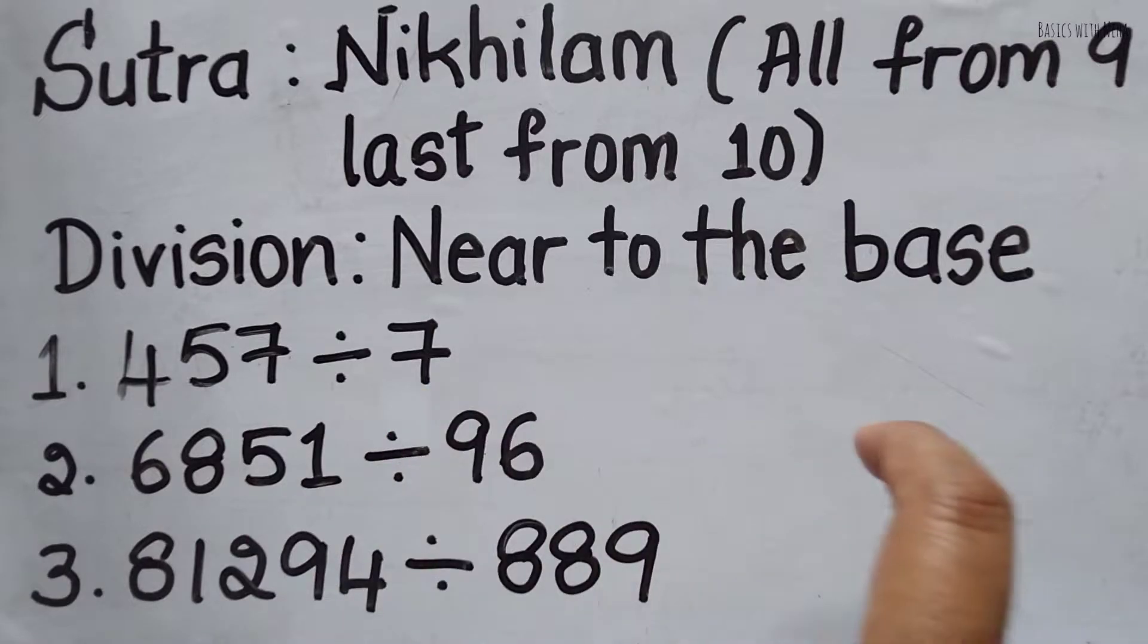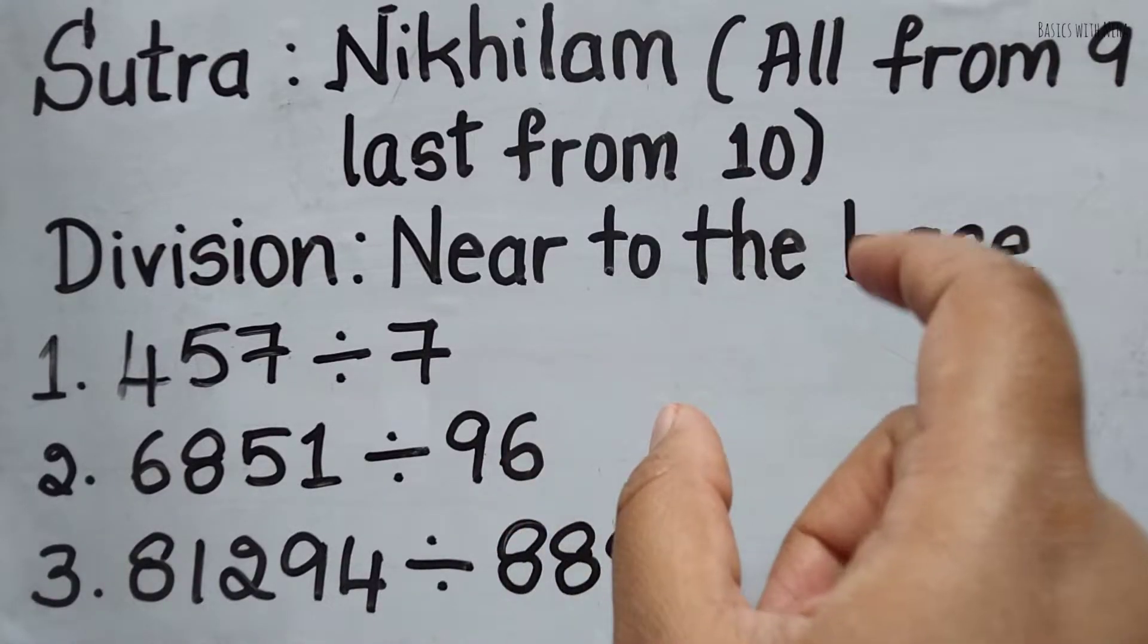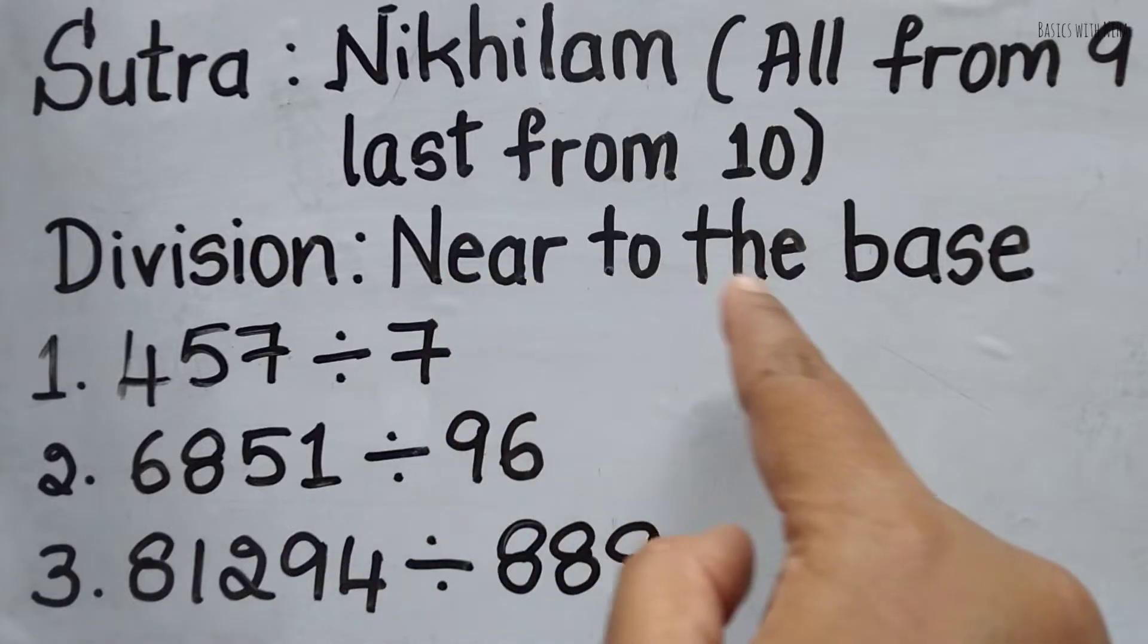And here the condition is the divisors that you take should be near to the base value. This particular sutra is applicable when the numbers are near to the base value.